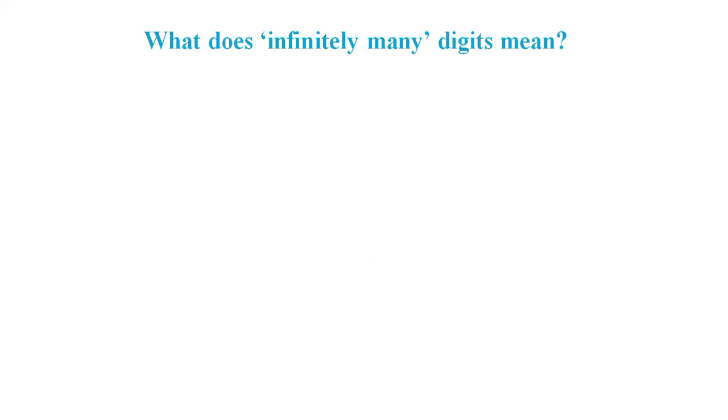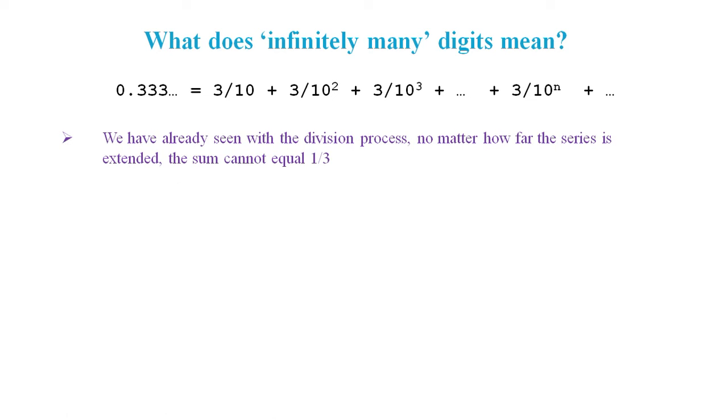So what does infinitely many digits mean? Well, we can think of 0.3 recurring as a series of terms: 3/10, 3/100, 3/1000, and so on. The sum of the series gets closer to but never reaches 1/3.